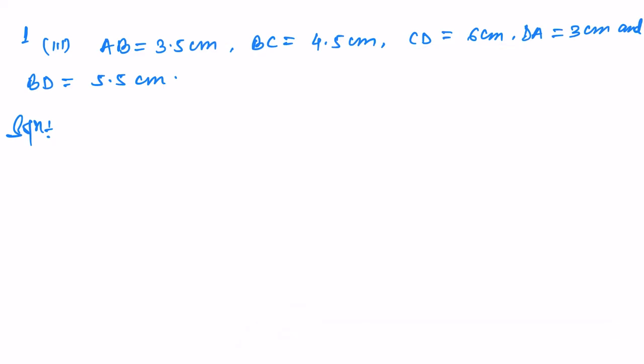So we need to find the area of a quadrilateral. Let us say this is a quadrilateral, a rough diagram ABCD. AB is given to be 3.5, BC 4.5, CD 6 cm, AD 3 cm, and BD, so B to D is given, which is 5.5 cm.